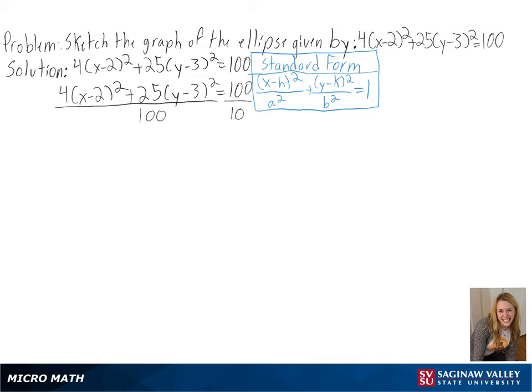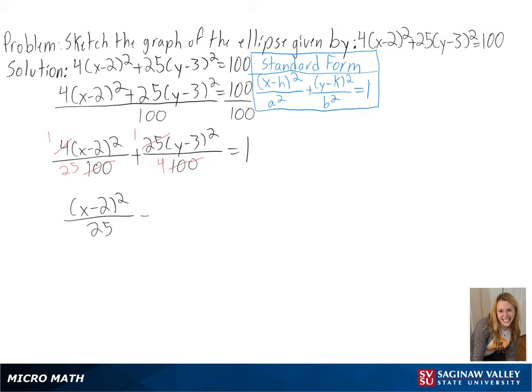Then we can simplify this. 4/100 equals 1/25, and 25/100 equals 1/4. So putting our equation into standard form, we get (x-2)²/25 + (y-3)²/4 = 1.